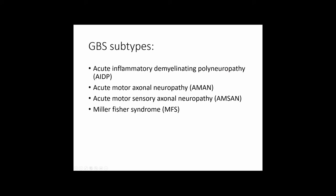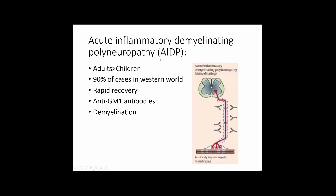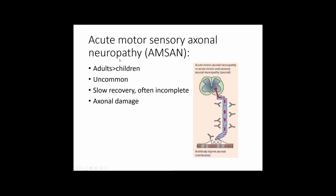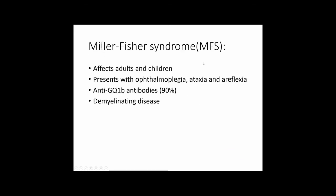There are different subtypes of GBS. Acute inflammatory demyelinating polyneuropathy (AIDP) is the most common in the Western world, associated with anti-GM1 antibodies. Acute motor axonal neuropathy (AMAN) is more common in children, young adults, and in China and Mexico, causing axonal destruction and associated with anti-GD1a antibodies. Acute motor sensory axonal neuropathy (AMSAN) is more common in adults and primarily causes axonal damage. Miller Fisher syndrome affects both adults and children, presenting primarily with ophthalmoplegia, ataxia, and areflexia.